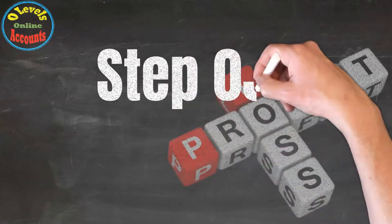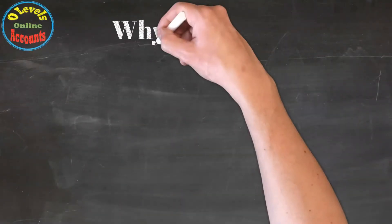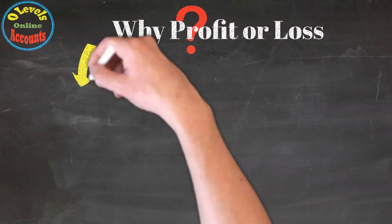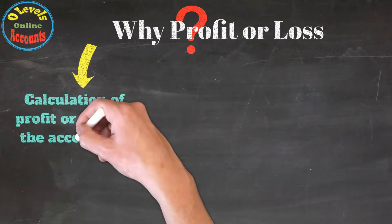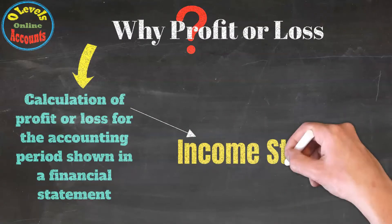The fifth step is calculating profit or loss for the accounting period. This calculation is shown in the financial statements. For this purpose, we prepare the income statement.